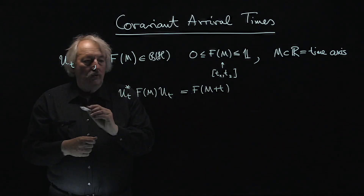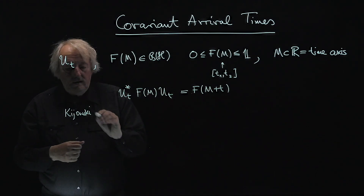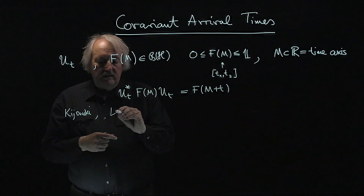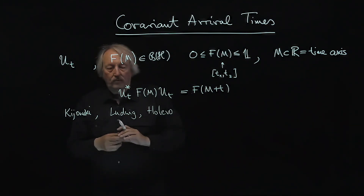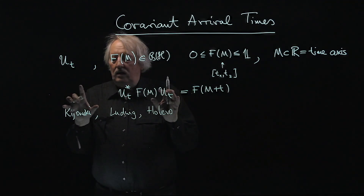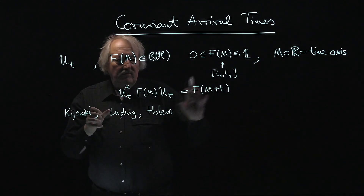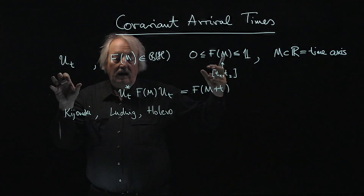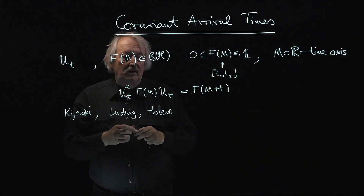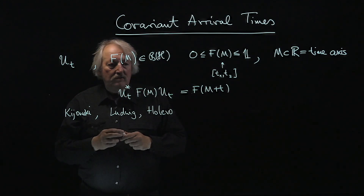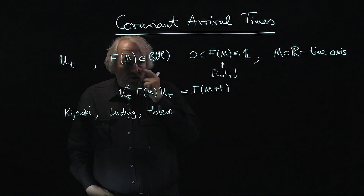This is the covariance condition. Key people who worked on this include Jadri Kijowski, who was among the first to do something like this. You also find it in a textbook by Ludwig, and in the works of Alexander Holevo. For Holevo, the question was: suppose somebody has made an arbitrary time shift of my quantum state, I have a detector, and I need to find out what the time shift was. Making an arrival time measurement is a good strategy — you put the detector there and infer the time shift from when it clicks. His paper is called something like 'estimating shift parameters.' From that point of view, it's natural not to insist on projection-valuedness.